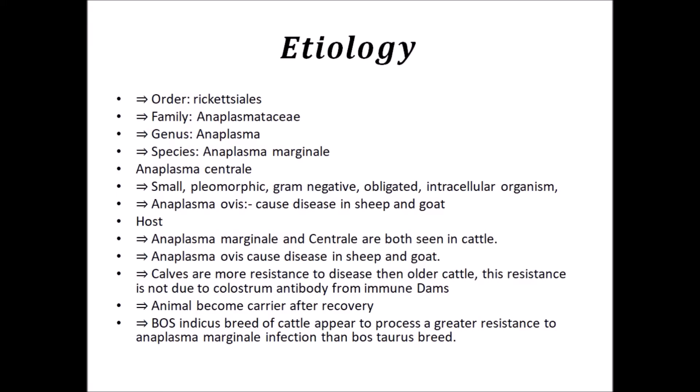Young calves are more resistant to disease than older cattle. This resistance is not due to colostrum antibody from immune dams. Animals become carriers after recovery. The Bos indicus breed of cattle appears to possess a greater resistance to Anaplasma marginale infection than the Bos taurus breed.